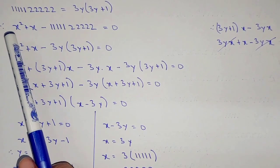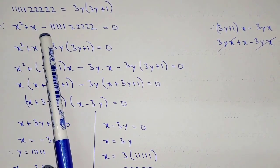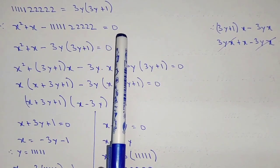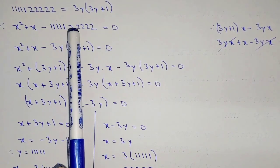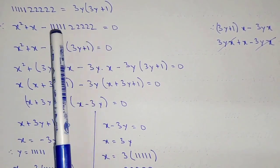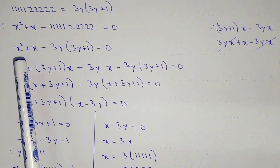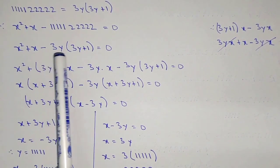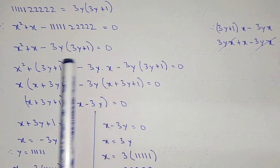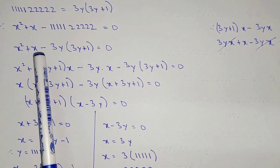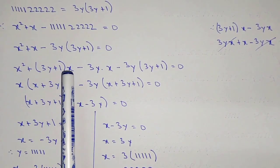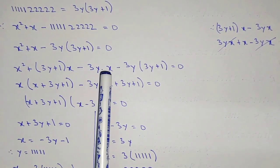Since in the question we have x squared plus x minus 5 times 1 and 5 times 2 equal to 0, substituting the value of this number as 3y into (3y plus 1) into the equation, we have x squared plus x minus 3y(3y plus 1) equal to 0.